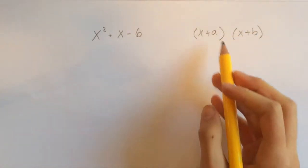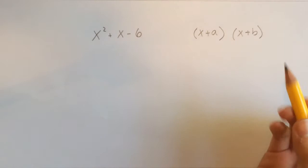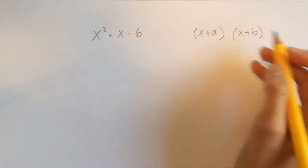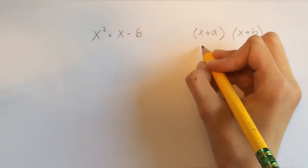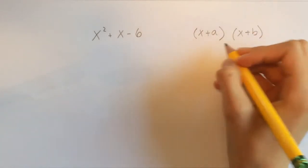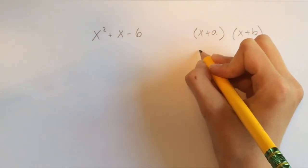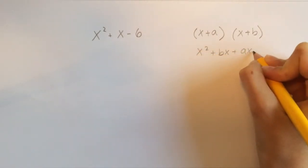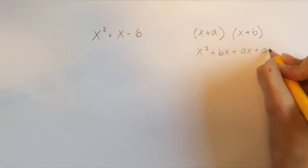Okay, so first of all, let's see what x plus a times x plus b actually is. So if you were to find this out, you would find that x plus a times x plus b is x squared plus bx plus ax plus ab.